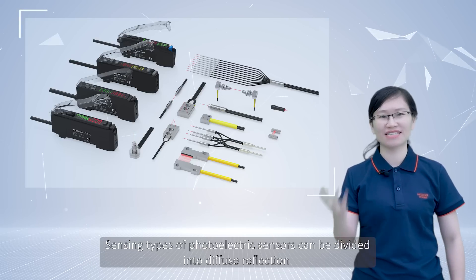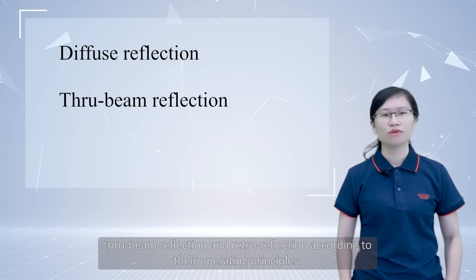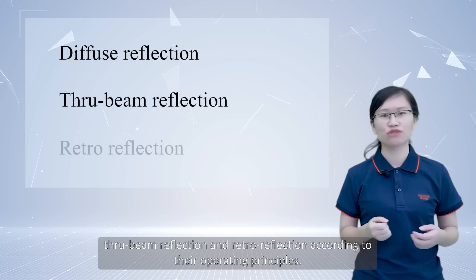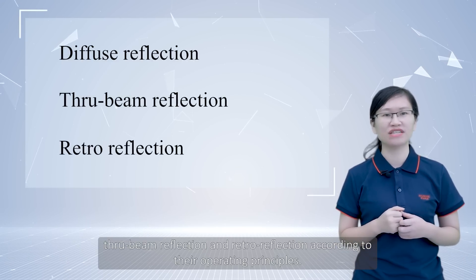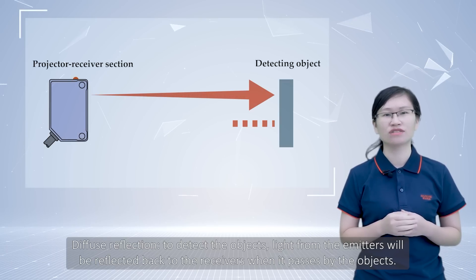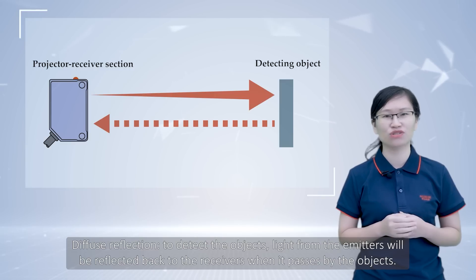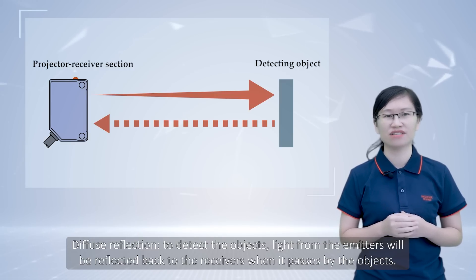Photoelectric sensors can be developed into diffuse reflections, through-beam reflections and retro reflections according to their operation principles. For diffuse reflections, to detect the objects, light from the emitters will be reflected back to the receivers when it passed by the objects.